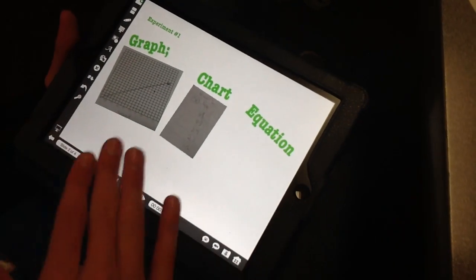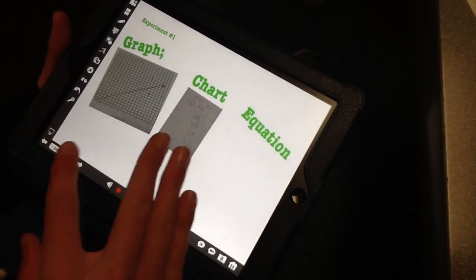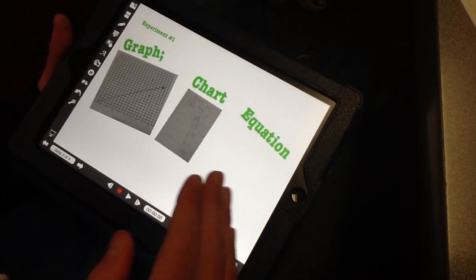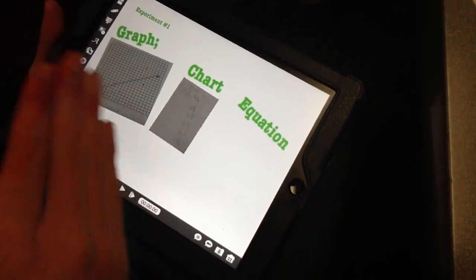What do you have going on? I have a graph that I took a picture of after we graphed it, a chart that we copied all the tables down so I could make the graph, and the equation to prove the chart and the graph.